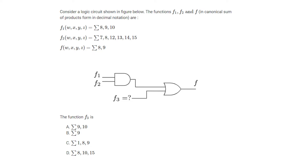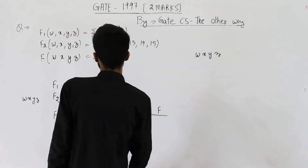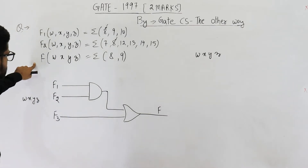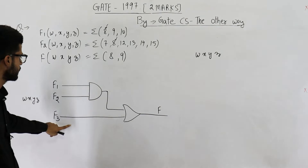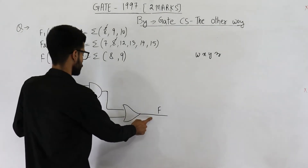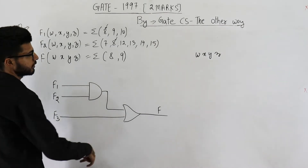Have a look at these three functions as well as the diagram given in the question. They're asking what the function F3 is. These are the three functions given in the question and we need to determine F3. F1 is known, F2 is known, and F is known. We need to find out F3.